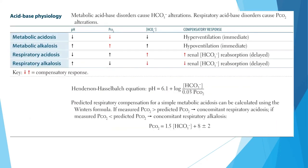Looking at the acid-base physiology slide: metabolic acidosis shows decreased pH, decreased pCO2 as compensation, and decreased bicarbonate as the primary mechanism. Everything else we have discussed in previous slides, so let's not go into further detail here.